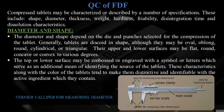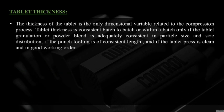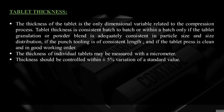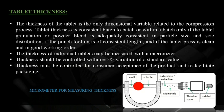A vernier caliper is used to measure the diameter of the tablets. Tablet thickness is the only dimensional variable related to the compression process. Thickness is consistent from batch to batch only if the tablet granulation or powder blend is adequately consistent in particle size and size distribution, if the punch tooling is of consistent length, and if the tablet press is clean and in good working order. Thickness of individual tablets may be measured with a micrometer and should be controlled within plus or minus five percent variation of the standard value, for consumer acceptance and to facilitate packaging.